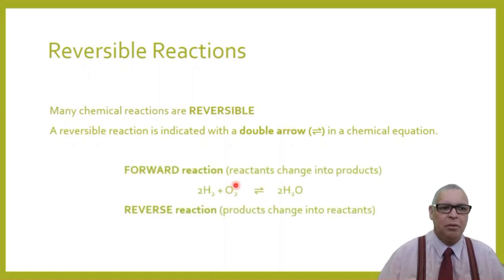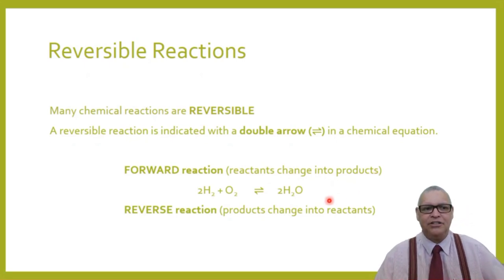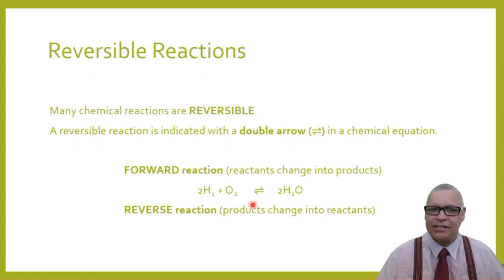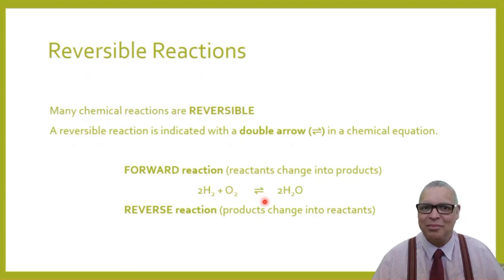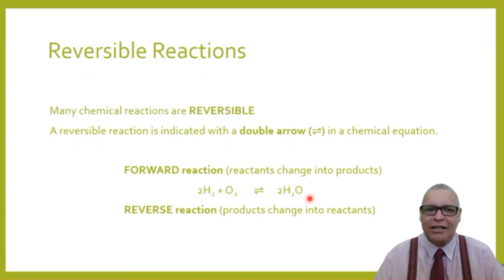The forward reaction is one in which the reactants change into products. From grade 10, you know the left-hand side of a chemical equation represents your reactants. For example, two moles of hydrogen plus one mole of oxygen are the reactants in a reversible reaction, and two moles of water on the right-hand side represents the products formed.